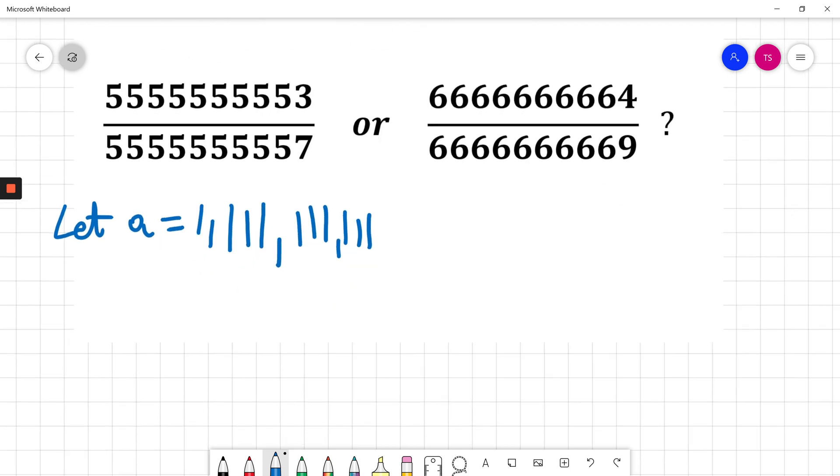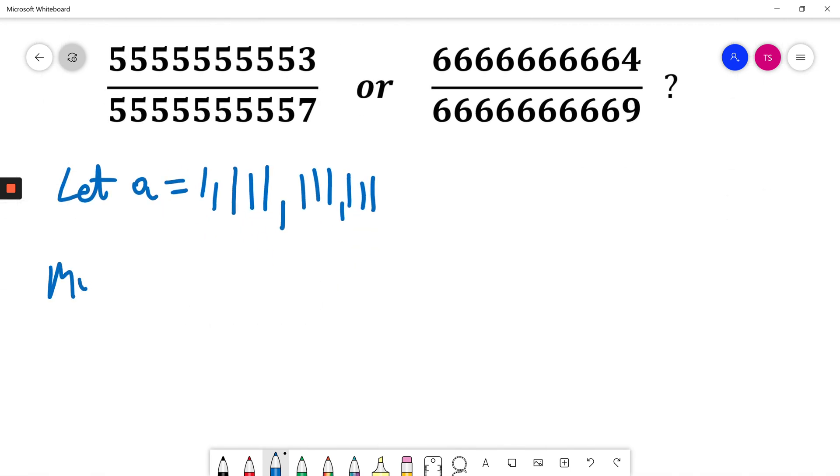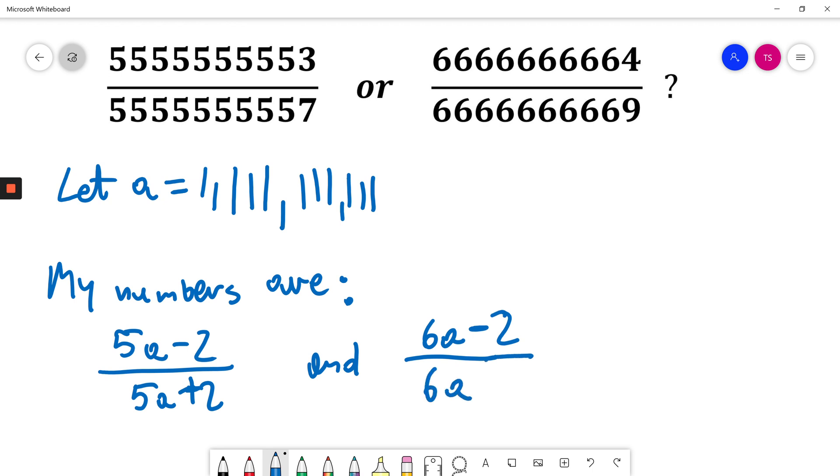Then my numbers are 5A-2 divided by 5A plus 2, and 6A-2 divided by 6A plus 3.